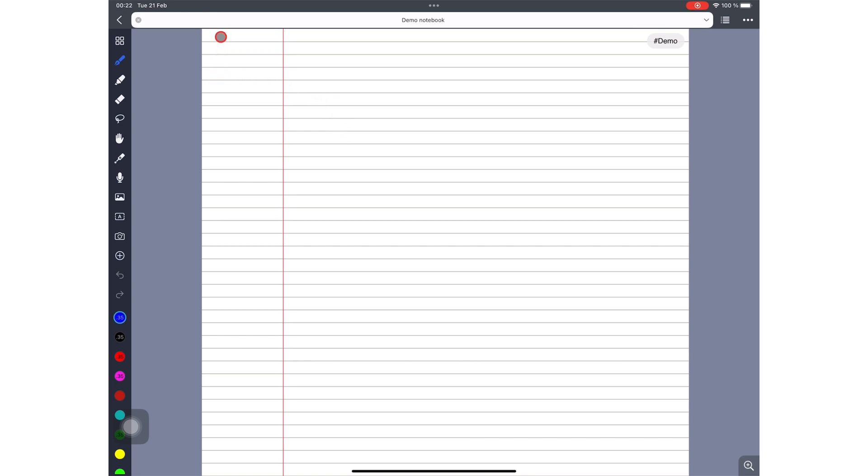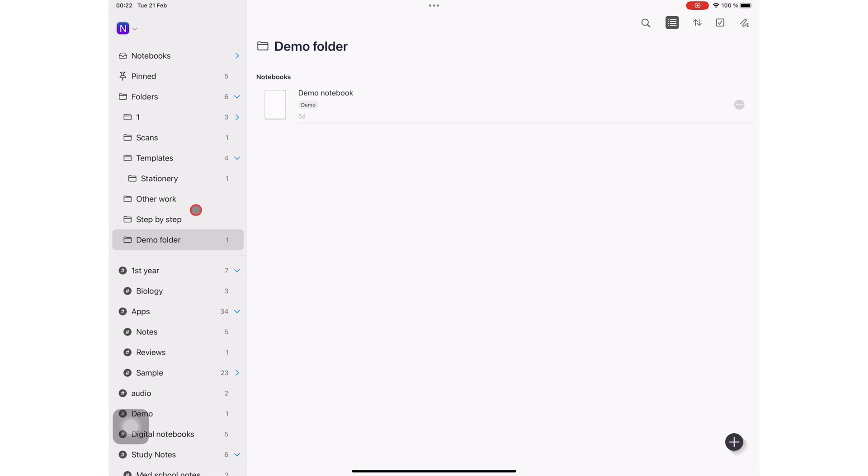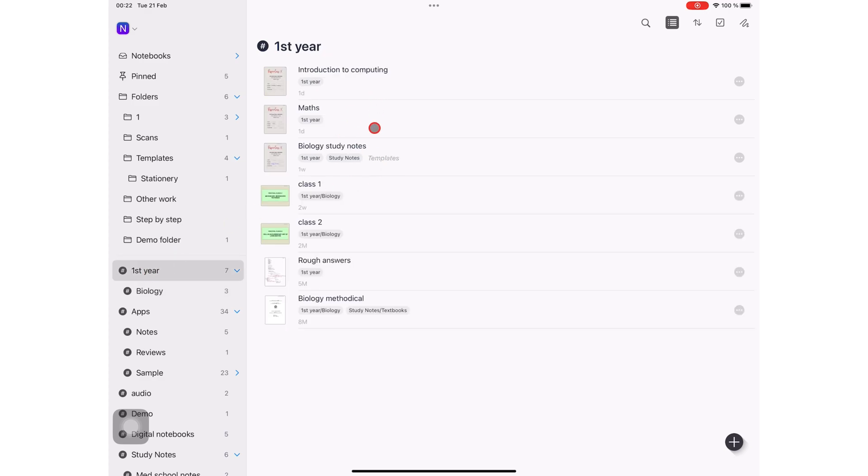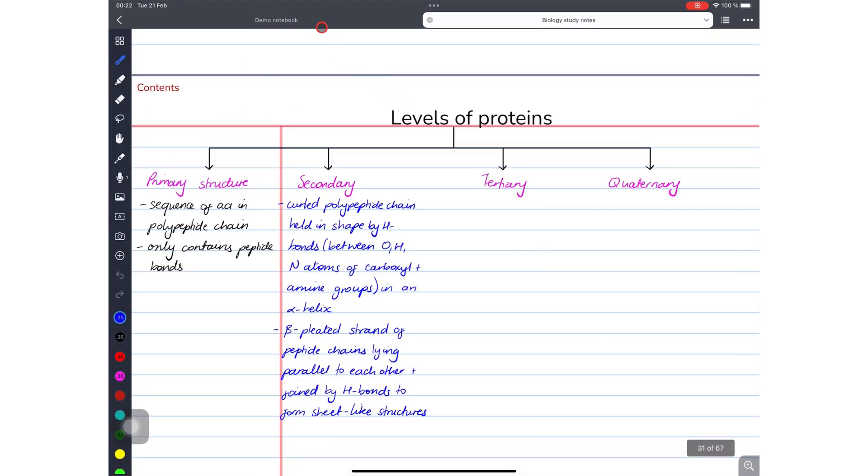So by default, your tabs, which is this one here where you have this demo notebook, are at the top of the app. At the moment, I just have one tab open. Let me see if I can open another tab, just so you understand how tabs work. So you see, now I have two tabs. These tabs are always at the top of the app.